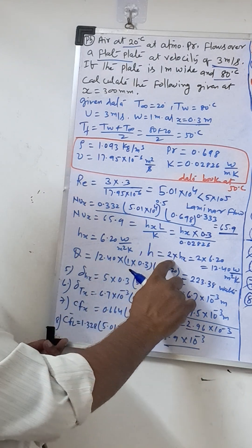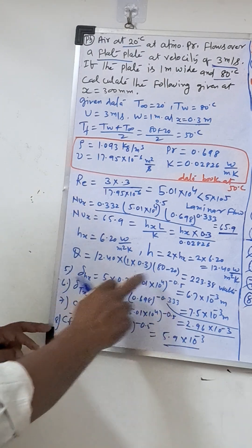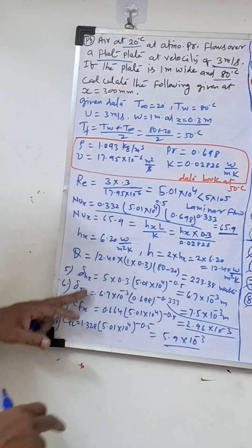Then we will find the local heat transfer coefficient. After local heat transfer coefficient for the flat fluid formula is 2 into hx, local heat transfer coefficient. Then we will get the heat transfer coefficient. Then all the values.